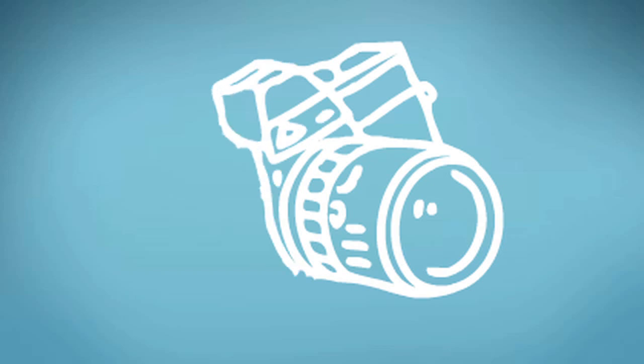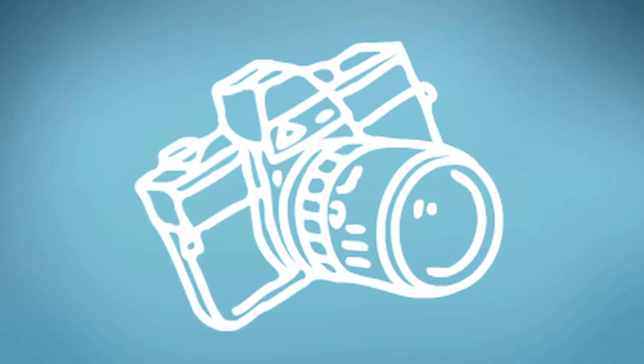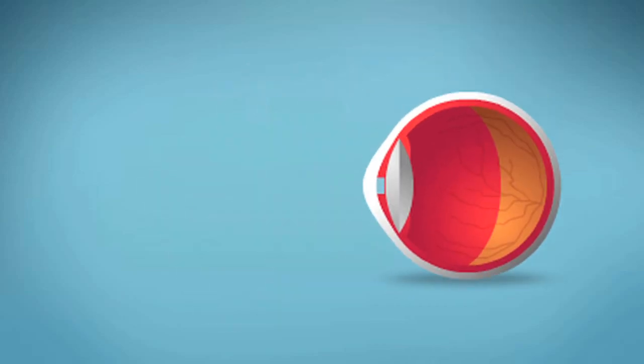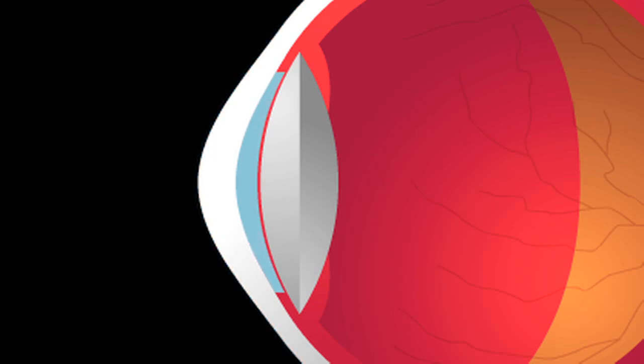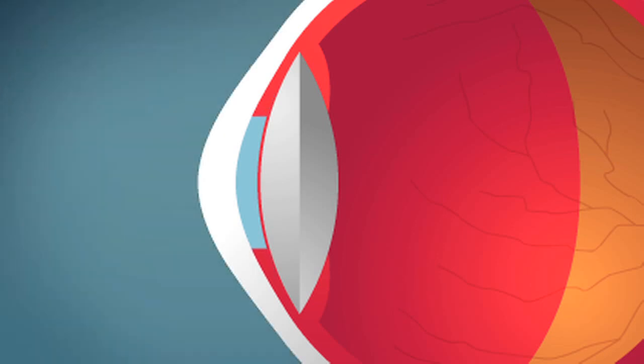Light enters the eye through the pupil, which works much like the shutter of an automatic camera to help us adjust to brighter or darker conditions. When we need more light, the pupil opens wider. When we need less light, the pupil becomes smaller.